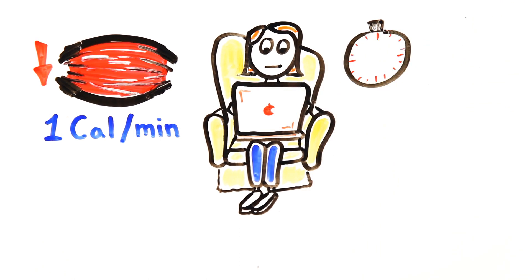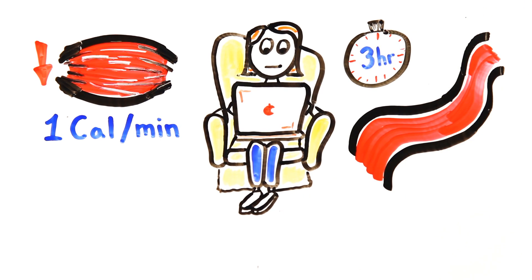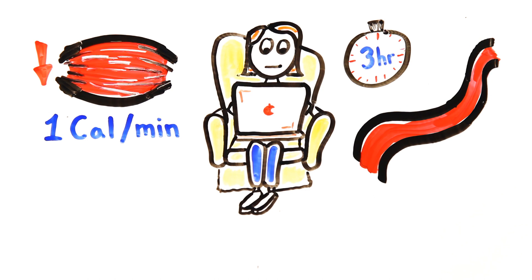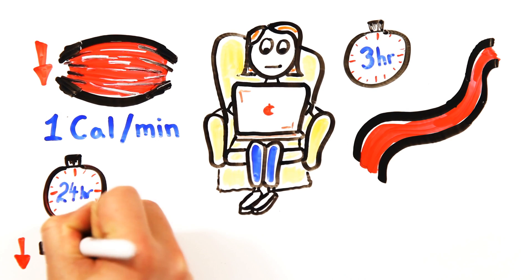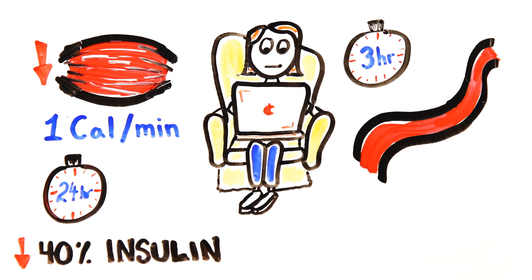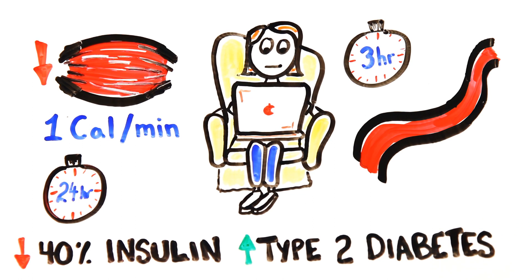After only 3 hours of sitting, there's a 50% drop in artery dilation and as a result a decrease in blood flow. Sit for 24 hours straight and the insulin in your body loses nearly 40% of its ability to uptake glucose, which increases the risk of type 2 diabetes.